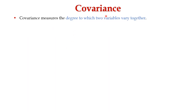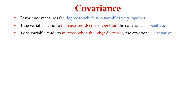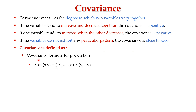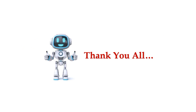Next, let's learn about covariance. Covariance measures the degree to which two variables vary together. If variables tend to increase and decrease together, the covariance is positive. If one variable tends to increase when the other decreases, the covariance is negative. If the variables do not exhibit any particular pattern, the covariance is close to 0. The population covariance formula is: Cov(x, y) = 1/n times the summation of (x_i minus x-bar) times (y_i minus y-bar). The sample covariance formula is: Cov(x, y) = 1/(n minus 1) times the summation of (x_i minus x-bar) times (y_i minus y-bar). Thank you all.